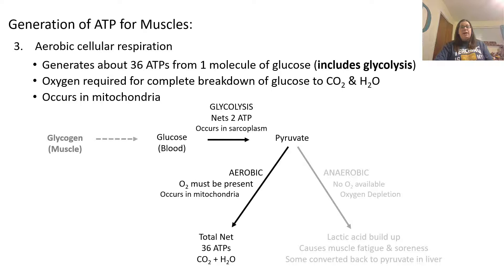In the anaerobic pathway, no oxygen is available, so only two ATP are formed and lactic acid builds up, causing muscles to fatigue and become sore. Your liver can take that lactic acid and convert it back to pyruvate for cells to use, but it has to get into the bloodstream first. This is one reason why, if you're sore, working out your muscles can push that lactic acid into your bloodstream, allowing the liver to process it rather than having it sit in your muscle tissue making you even more sore.